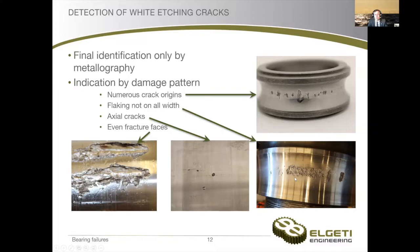Normally, in case of rolling contact fatigue, we have one, two, maybe three origins of flaking. If we have multiple of them, this means something is wrong with the material — it can be an excessive amount of inclusions or structural alteration, which mechanically have the same consequences. Then the next indicator would be flaking not on the complete width, like in this case. This is very characteristic — it means that somewhere here we have our white etching areas and here not. Axial cracks going along with pits is also something we will never see in pure rolling contact fatigue.